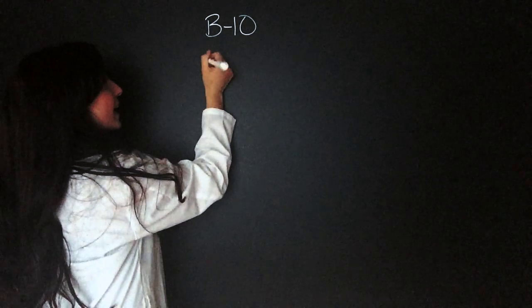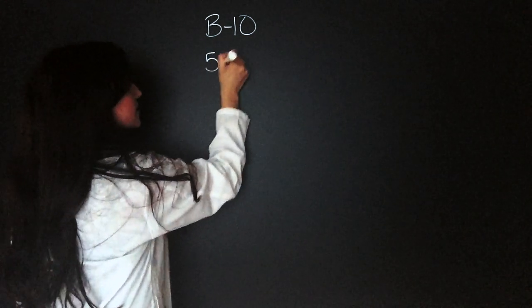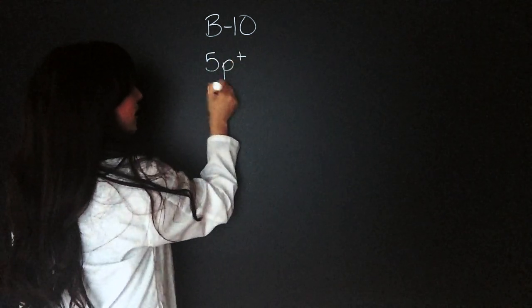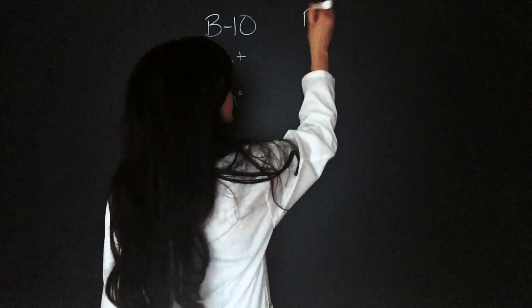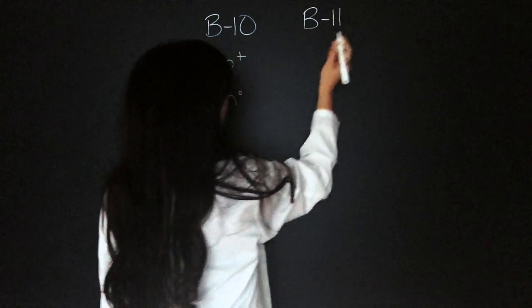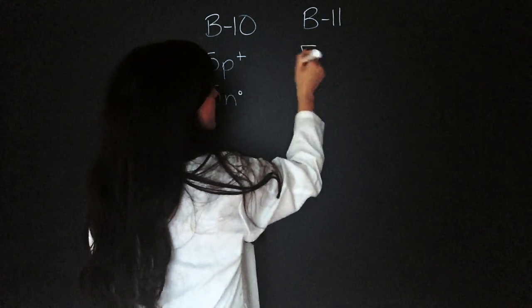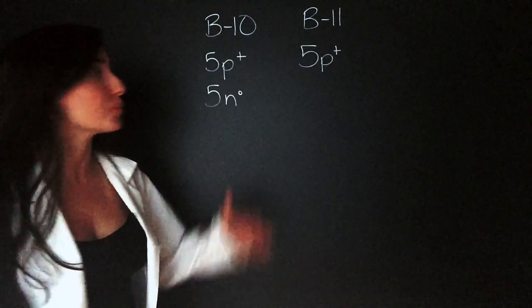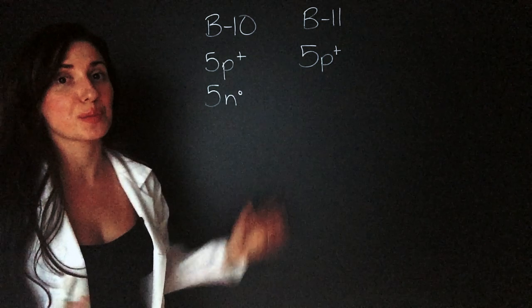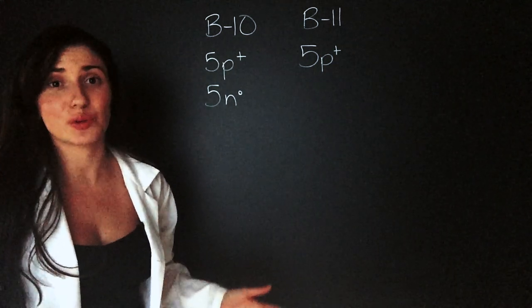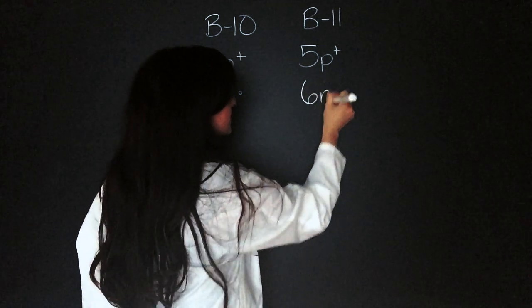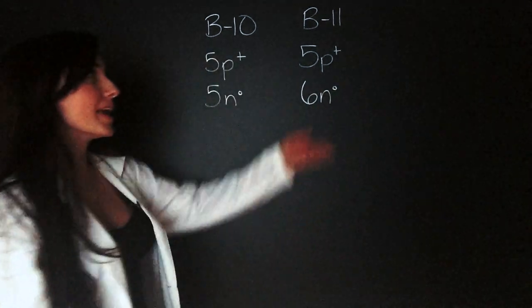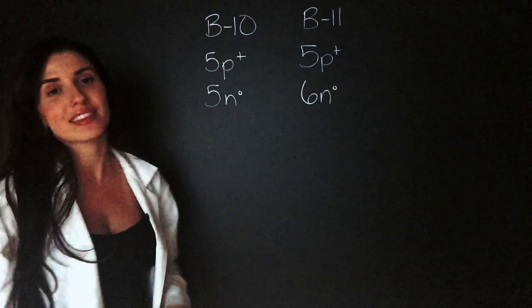Boron has only two isotopes. B10 has five protons and five neutrons. The second is B11. B11 still has five protons — remember, the protons cannot change. If the protons change, then we're not dealing with boron anymore. But it has six neutrons, which makes B11 heavier than B10.